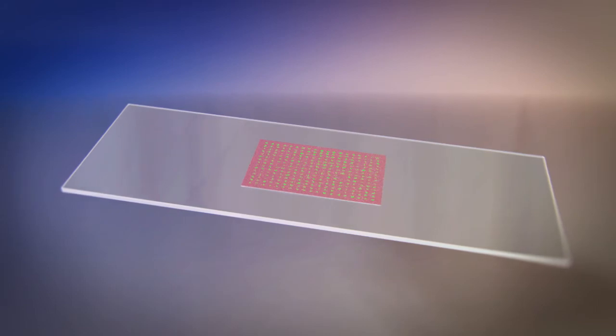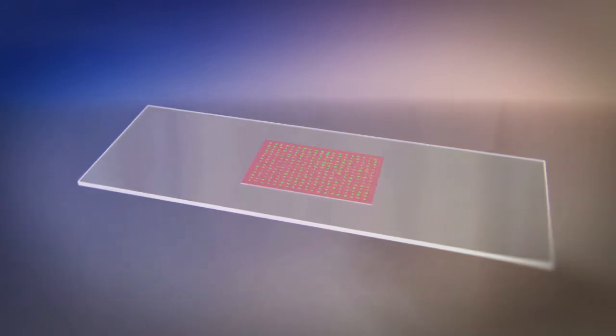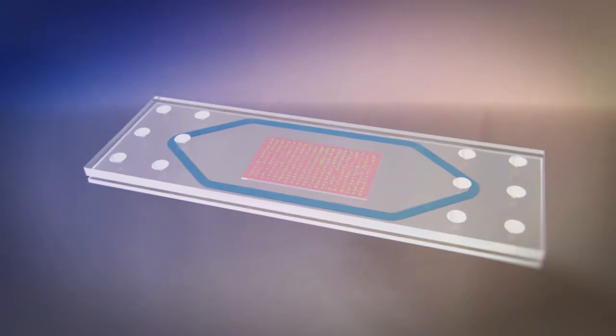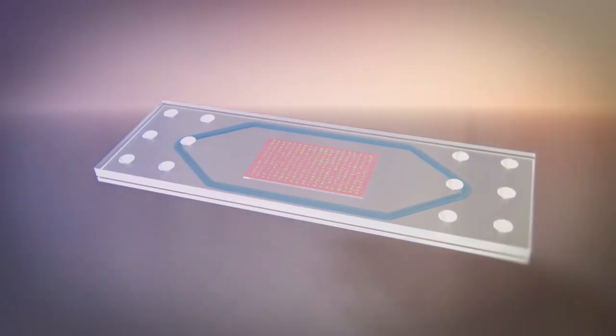First, the flow cell is assembled by placing a glass cover with a gasket on top of the cell array. This assembly is inserted into a flow cell holder.